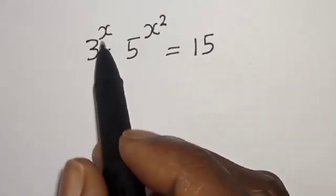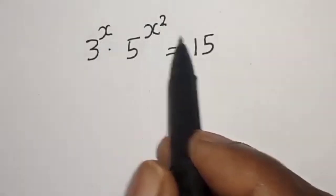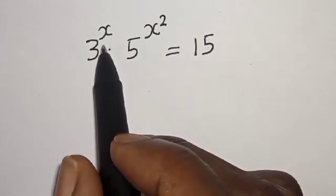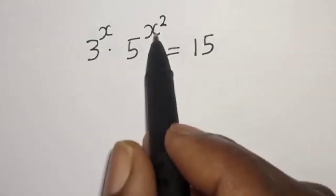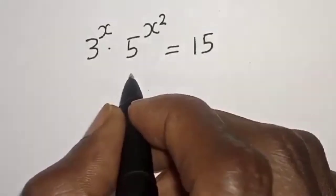3 raised to power s, multiplied by 5 raised to power s squared, is equal to 15. We want to find the value of s from this given equation.